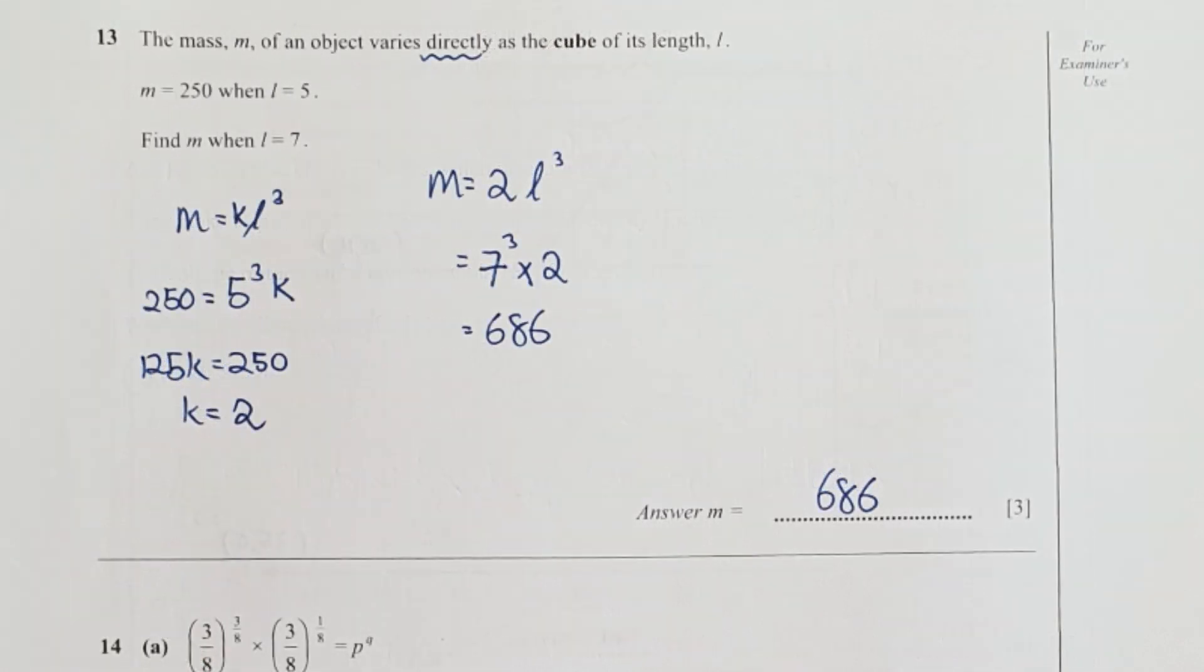Question 13, the keyword here is directly, so my equation goes by m equals to k times L³. Substitute the m and L's value in, I get my k equals to 2. Substitute 7 and 2 into it, then you will get your result as 686.